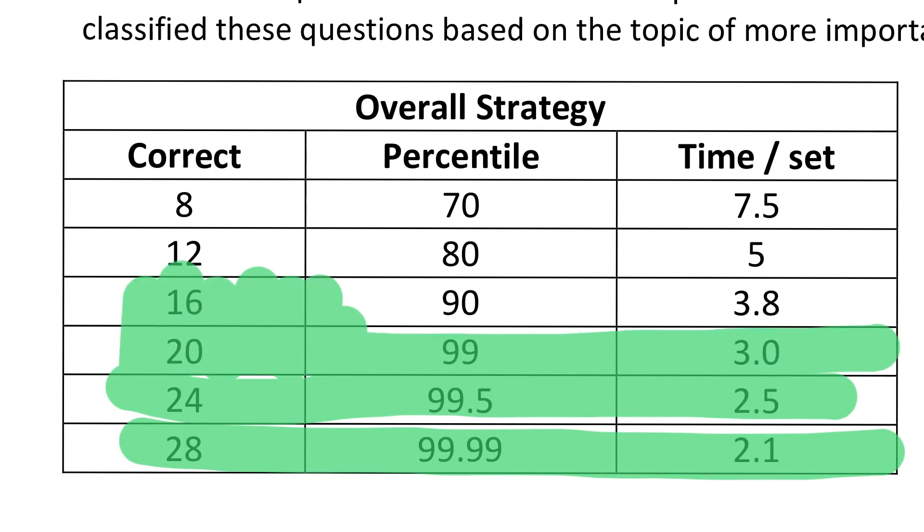20 marks is 99 percentile, only 20 questions correct. Out of 34, if I do 24, 2-3 questions wrong ho gaya, 21 right, negative marking karke 20 questions right, I am getting 99 percentile. So 24 to 28 is a very good attempt in the CAT exam to get 99 percentile. If you just have to safe it, 16 questions is 90 percentile, 12 questions is 80 percentile, and 8 questions is 70 percentile.